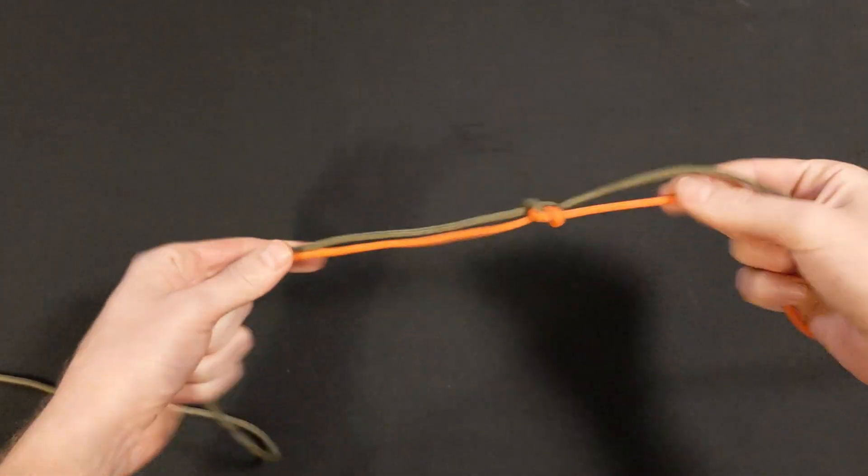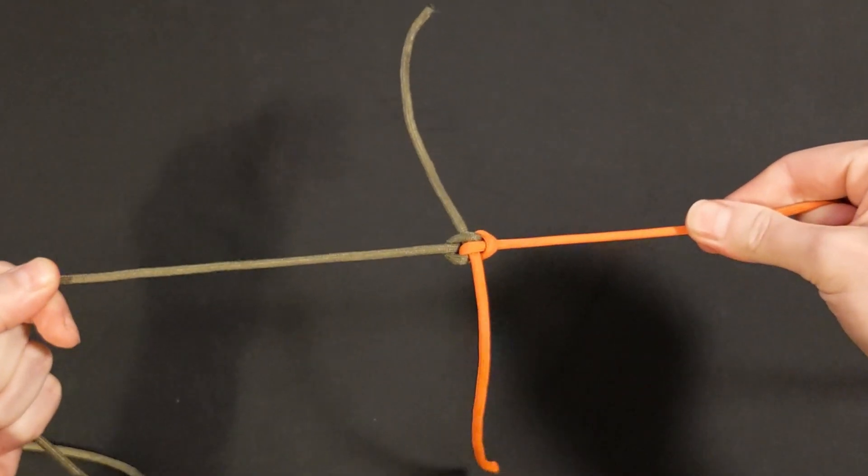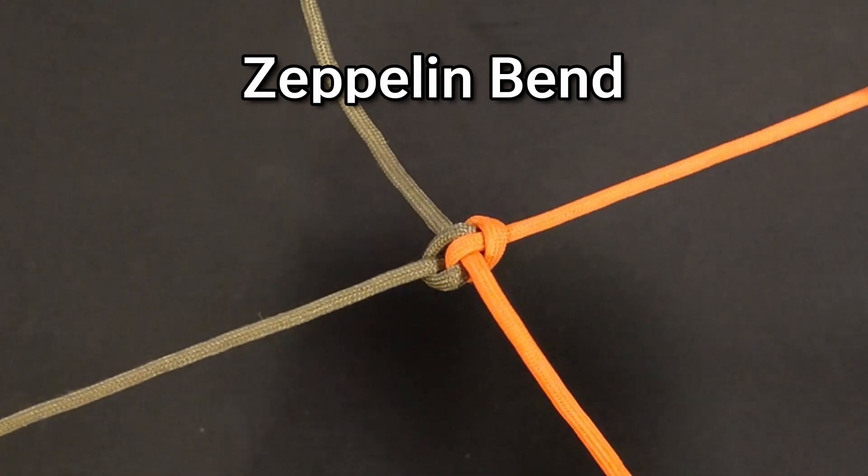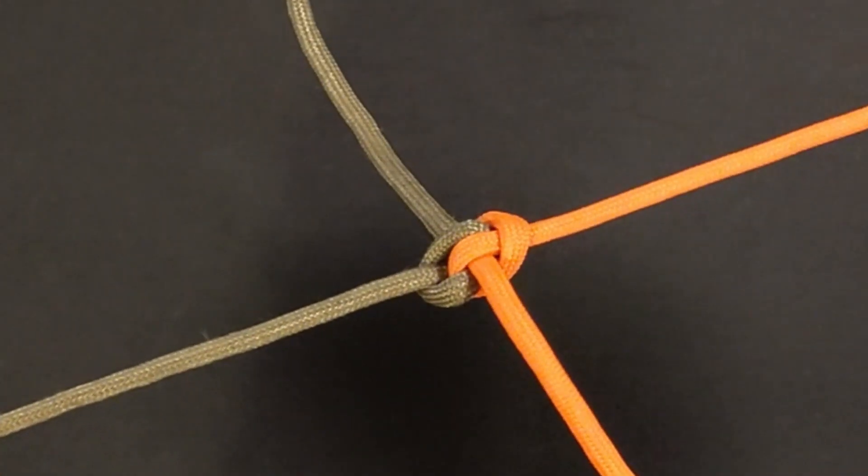This lesser-known bend might be the best-kept secret of the knot-making world. The Zeppelin bend is arguably the best all-around general-purpose bend.